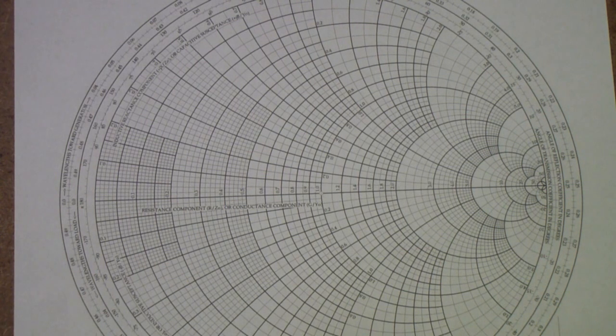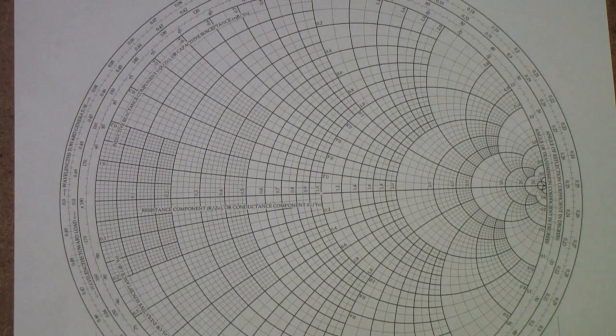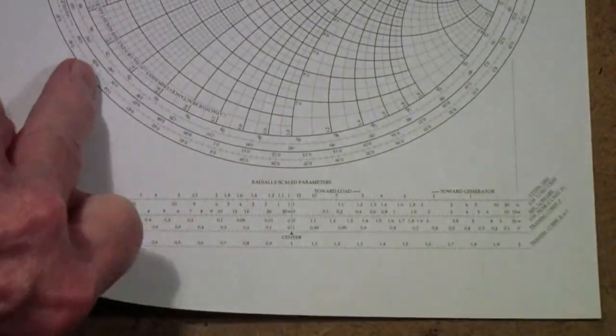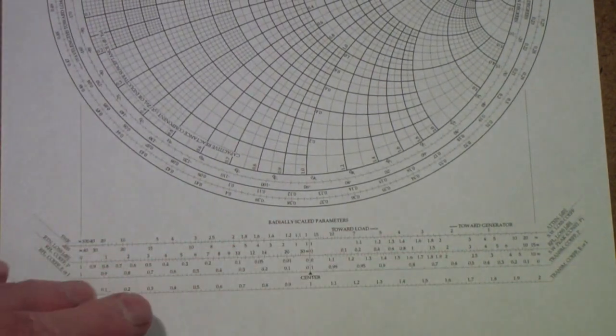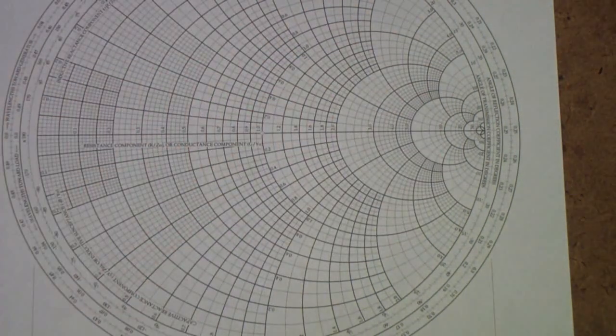maybe I can bring a little bit of order out of this by simplifying the Smith chart itself down to its essential elements, and then explaining how those elements work, or how you can read the Smith chart to find out what these circles, and to use an old song from my youth, the circles and arrows and a diagram on the description on the back of each one. If you remember Alice's Restaurant, that's from that song.